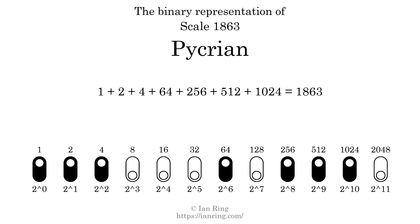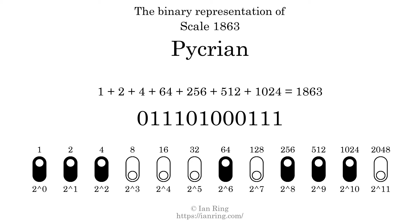That is why the scale number, in decimal, is 1,863. The scale number not only enumerates the scale with a unique index, but it also literally describes the tonal content of the scale, represented as a binary number in base 2.